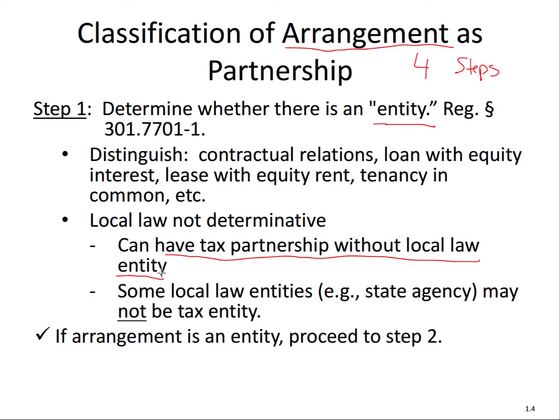There was a U.S. Supreme Court case from 1949 called Culbertson v. Commissioner. This is really the main case with respect to the jurisprudence dealing with whether an activity is considered a partnership for tax purposes. The court focused on two things: the actual business activity and the fact that the parties are sharing profits. If there's no sharing of profits or no joint business activity, then you will not have a partnership for tax purposes.